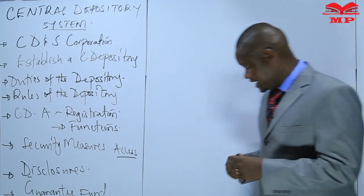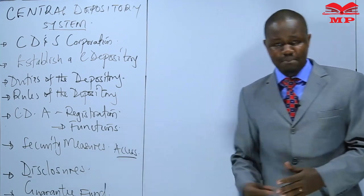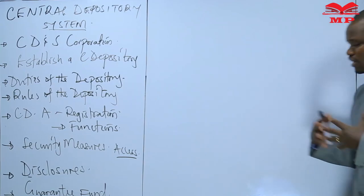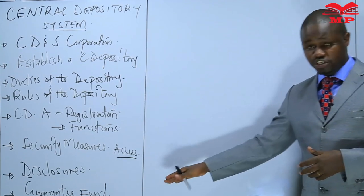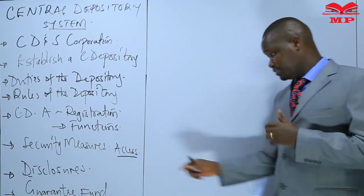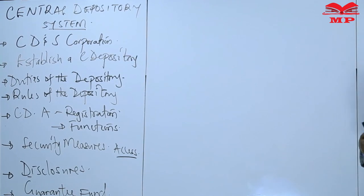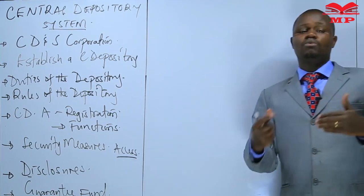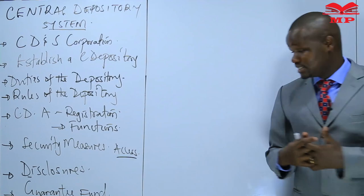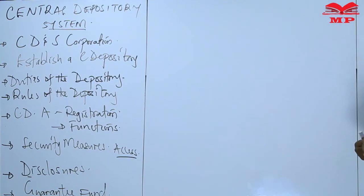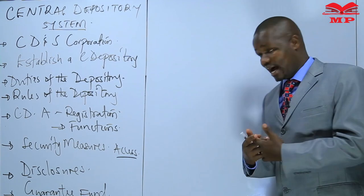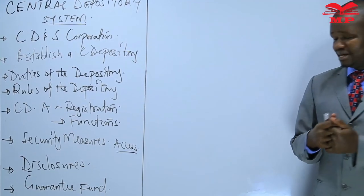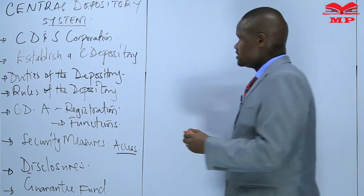Security becomes very important. There is a legal requirement on matters to do with the keeping of information by a depository and matters to do with access to their computerized systems. There are some offenses prescribed by law that we would wish to allude to. Then matters to do with disclosures — what sort of information and under what circumstances may these depositories or their agents be allowed to share information relating to their account holders. Finally, matters to do with the guarantee fund to be maintained by a depository.